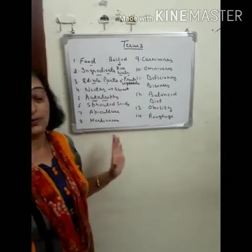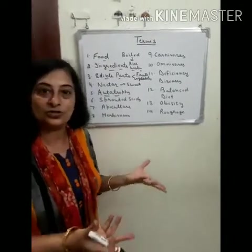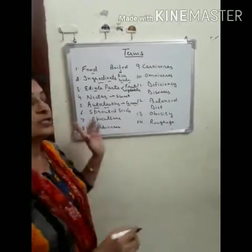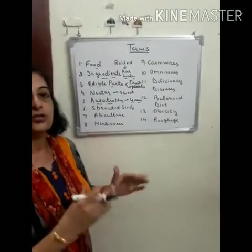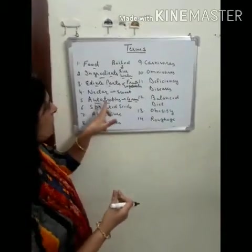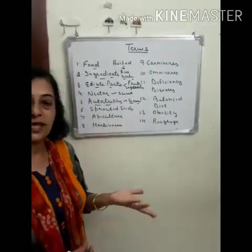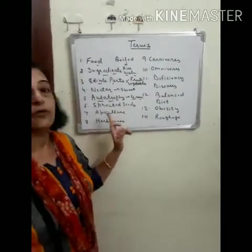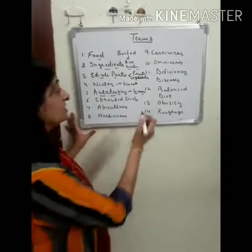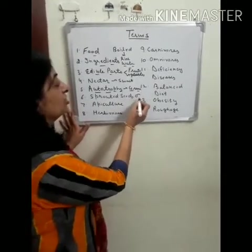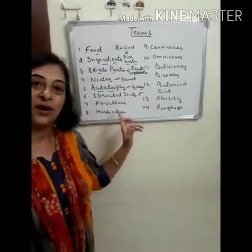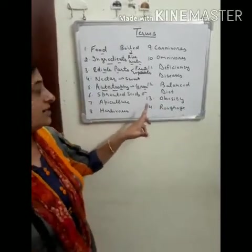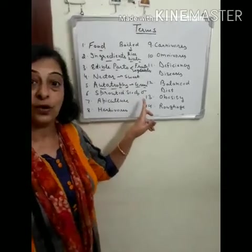The next term is autotrophs. Green plants are autotrophs because they can synthesize their own food through the process of photosynthesis. Any living organism which can synthesize its own food, like green plants, is called an autotroph. Next, sprouted seeds — seeds in which a small white structure is growing out are known as sprouted seeds. Sprouted seeds are good for health.